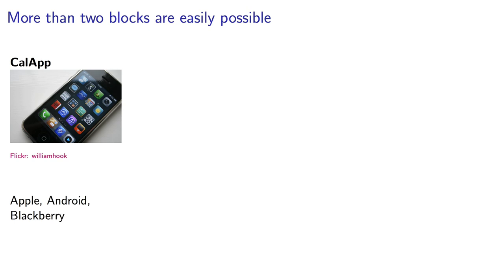Though it's outside the scope of this course, more complex blocking schemes are possible. For example, if we were testing Apple, Android, and Blackberry users, we would have three levels.